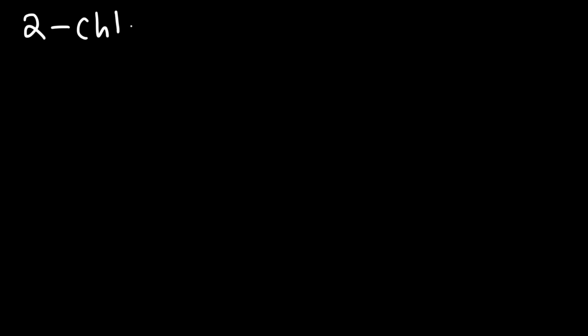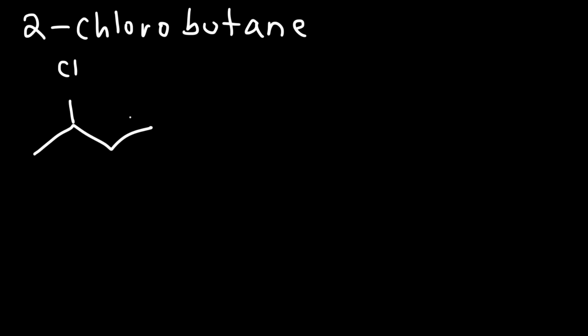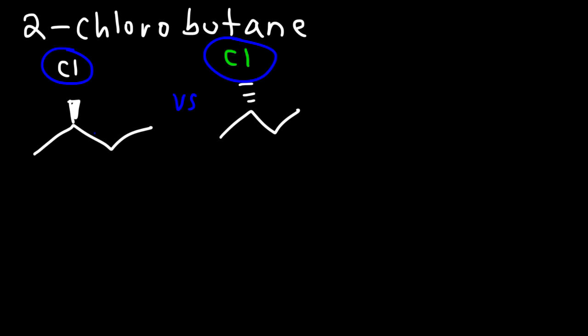How many stereoisomers can we draw for 2-chlorobutane? Butane has four carbons and we have a chlorine atom on carbon 2. We could put the chlorine atom in the front or we could put it in the back, so we can draw two stereoisomers for 2-chlorobutane. These two stereoisomers are enantiomers because they have the opposite configuration at their chiral centers and they don't have an internal plane of symmetry.